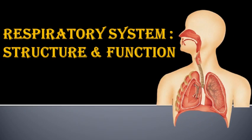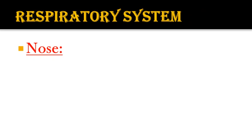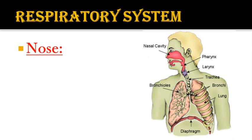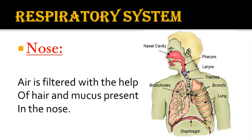The first organ of the respiratory system is the nose. Respiration begins with the nose — with its help we breathe in oxygen and breathe out carbon dioxide. Air is filtered with the help of hair and mucus present in the nose, so the air entering the body is cleaned.